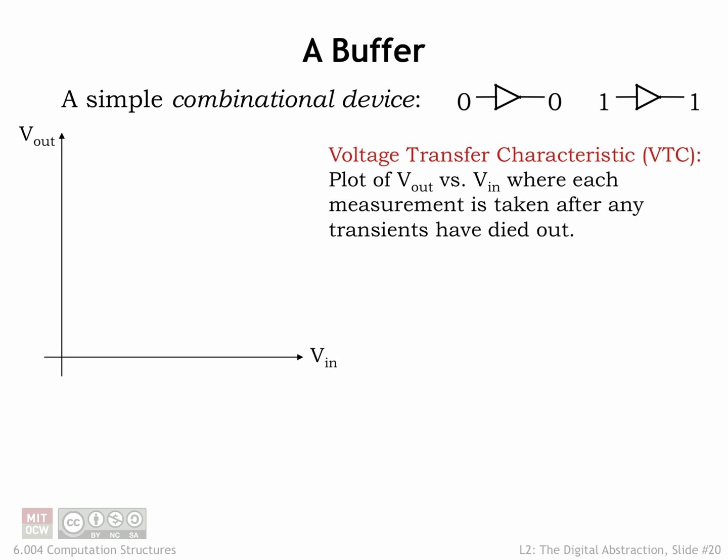Let's make some measurements using one of the simplest combinational devices: a buffer. A buffer has a single input and a single output, where the output will be driven with the same digital value as the input after some small propagation delay. This buffer obeys the static discipline — that's what it means to be combinational — and uses a revised signaling specification that includes both low and high noise margins.